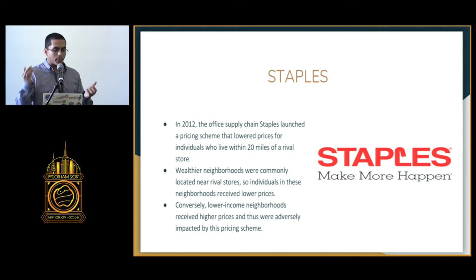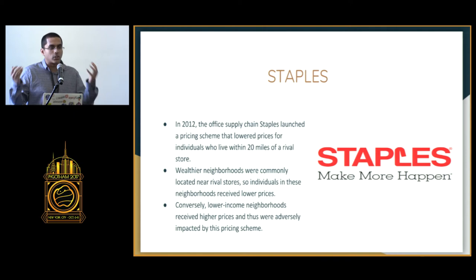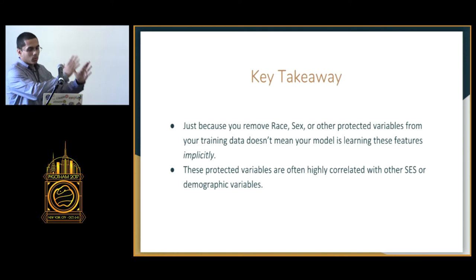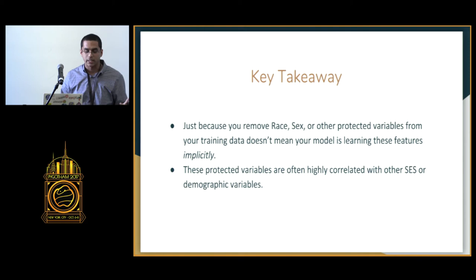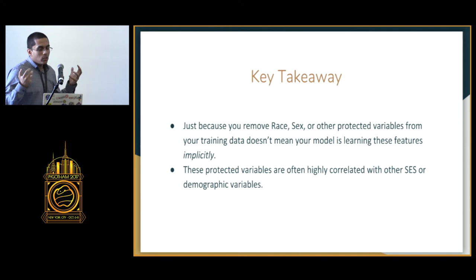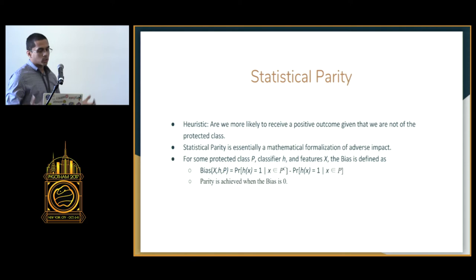A good example is the office supply company Staples, which launched a pricing scheme in 2012 that lowered prices for individuals living within 20 miles of a rival store. It turned out that wealthier neighborhoods were commonly located near rival stores, so those individuals received lower prices, while people in lower-income neighborhoods received higher prices. Since income correlates with socioeconomic and demographic variables, this accidentally discriminated against people of certain socioeconomic status. This highlights the main point: just because you don't look at race, sex, or another protected variable in your training data doesn't mean your model isn't learning these features implicitly.